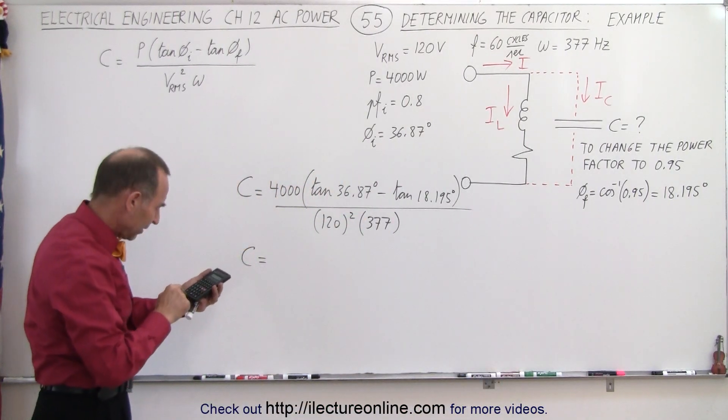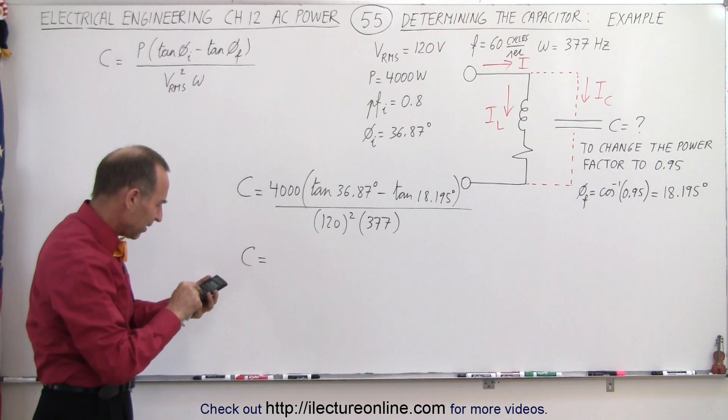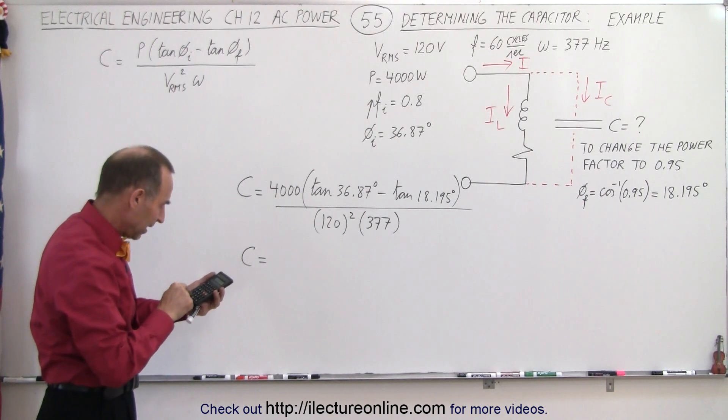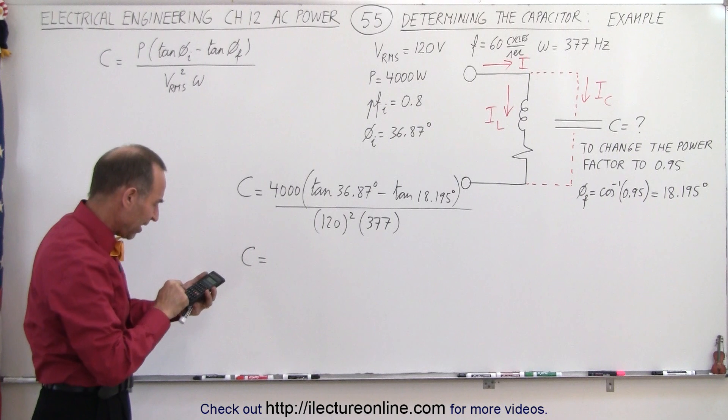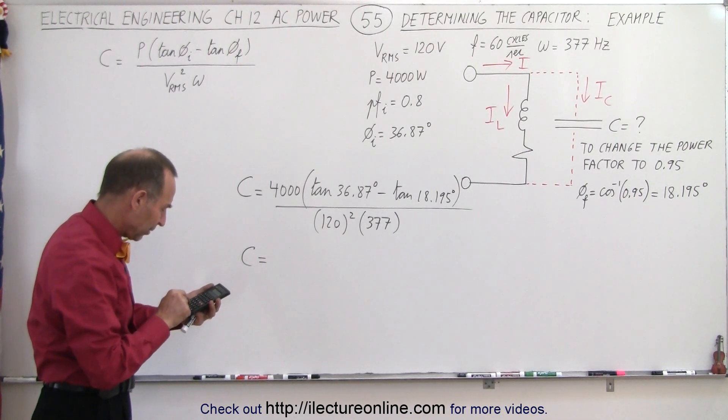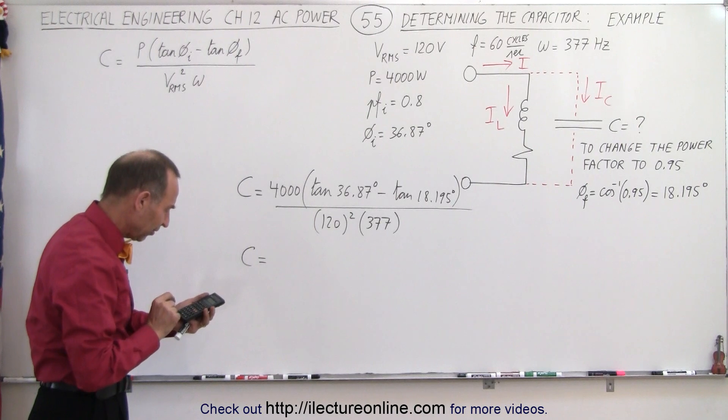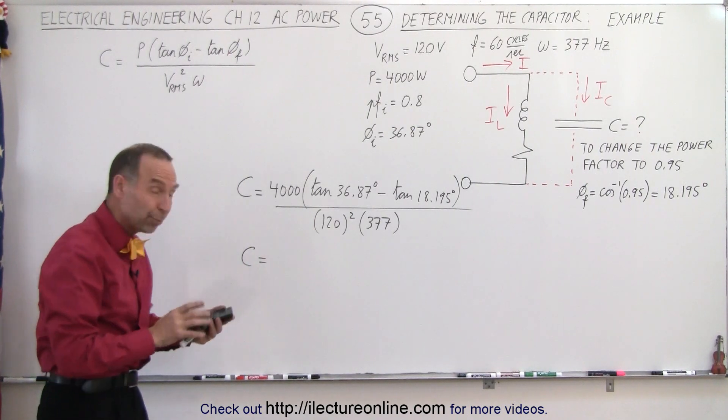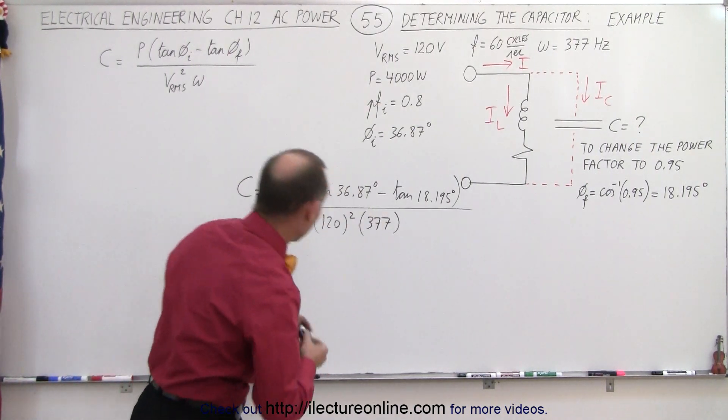So let's see here, we get 36.87, take the tangent of that, minus 18.195, take the tangent of that, then multiply times 4000, divide by 120 squared, and divide by 377. That gives us a capacitor of 310.4 microfarads.